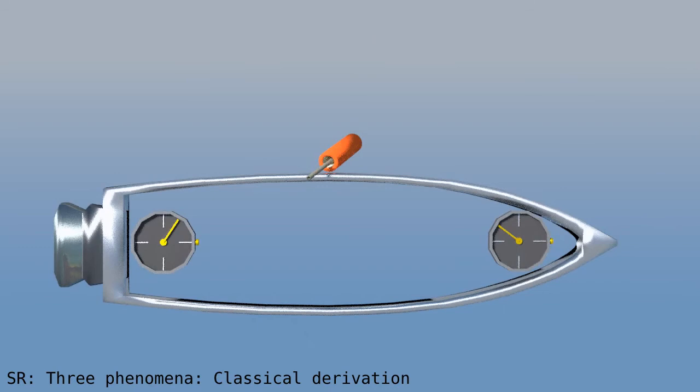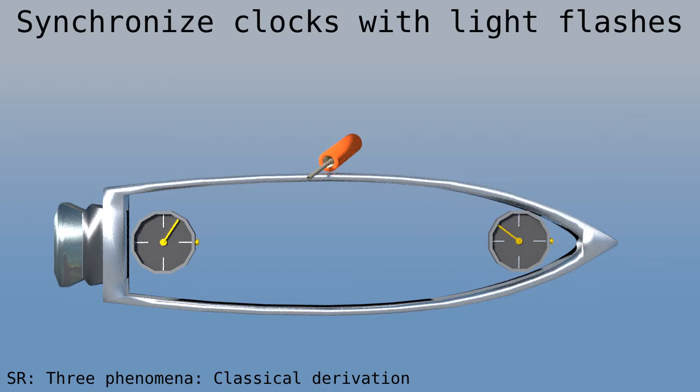Finally, let's look at how to synchronize clocks at different locations. Here we have a firecracker, halfway between two clocks. When it explodes, it creates a light flash. When the light flash arrives at a clock, that clock is reset to zero and started.